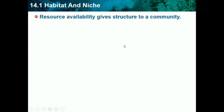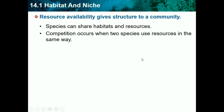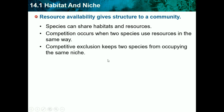Resource availability gives structure to a community. A community needs resources to survive. Species can share habitats and resources with other species — like birds in a rainforest also living with other predators like tigers. Competition occurs when two species use resources in the same way. Competition exclusion keeps two species from occupying the same niche. In the desert, for example, species probably compete for the little water they have.